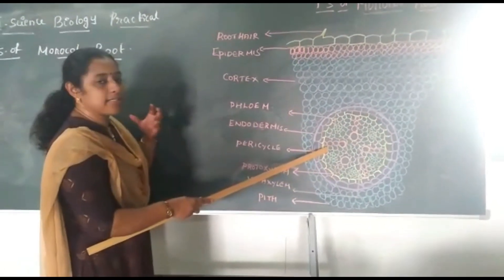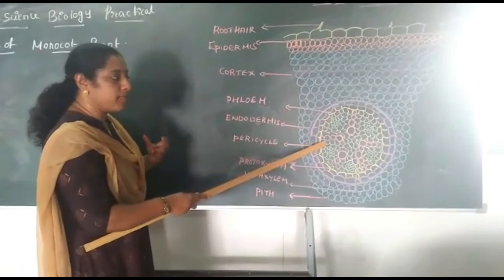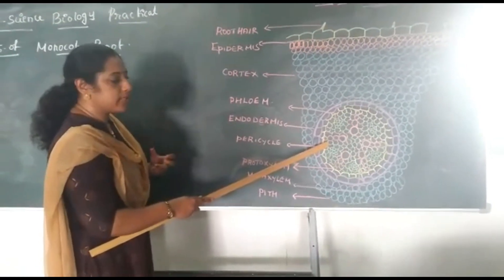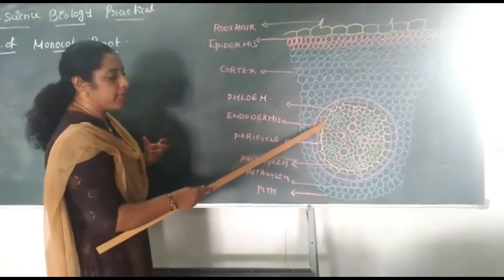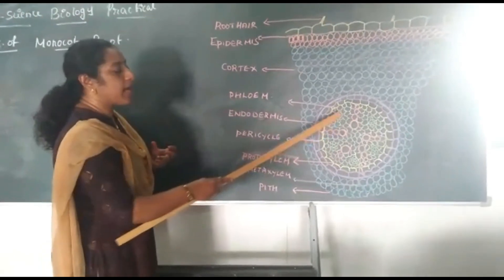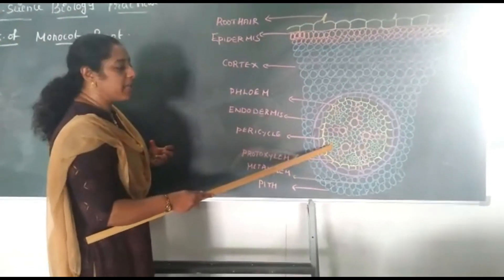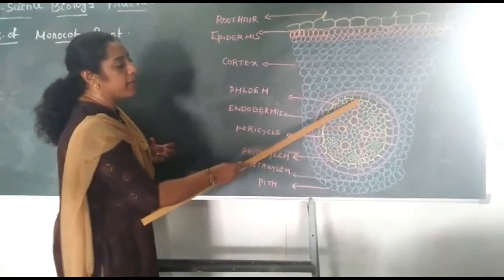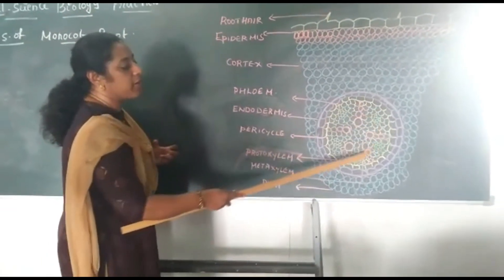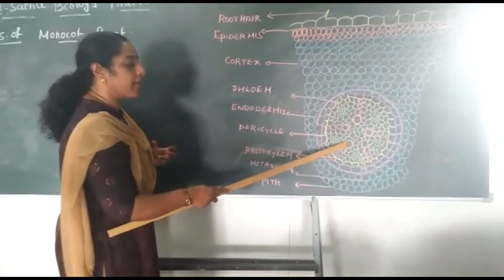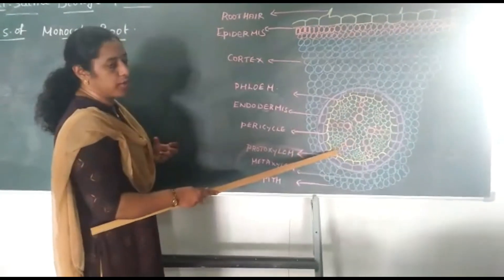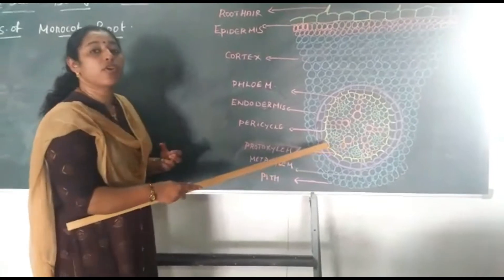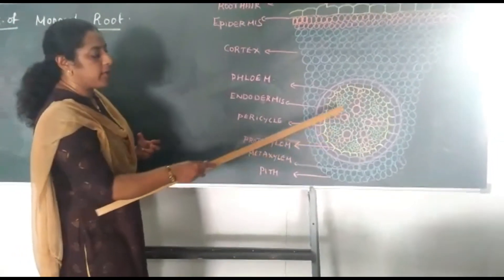There are some technical terms to represent the vascular bundle. In a root the vascular bundles are mainly exarch and also radial. Radial means the Xylem and Phloem are arranged in different radii. As they are alternate with each other, this is called alternate vascular bundle.